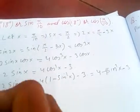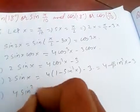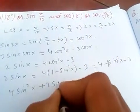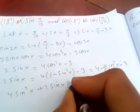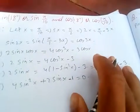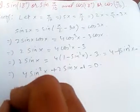Rearranging, we have 4 sine squared x plus 2 sine x minus 1 equals 0. This is a quadratic equation.